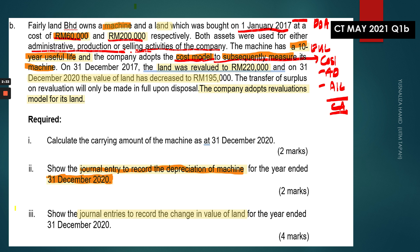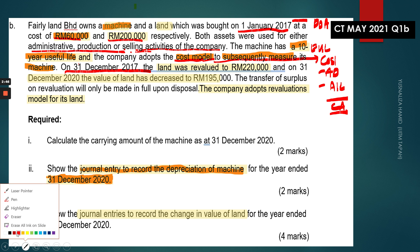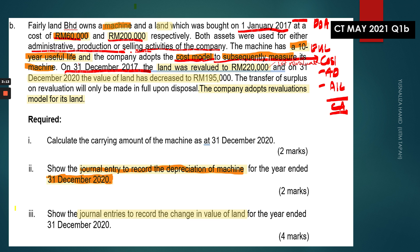On 31st of December 2017, this is the date of the first revaluation. The land was revalued to $220,000, which is the fair value on the first revaluation. Then on 31st of December 2020, there is a subsequent revaluation — the second revaluation — and the fair value has decreased to $195,000, representing a downward revaluation.